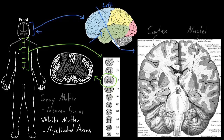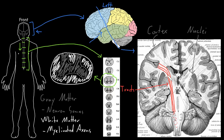Now in the white matter of the central nervous system are collections of axons traveling together to different areas. There are multiple neuron axons traveling together, starting in a similar area and heading to a similar area somewhere else in the central nervous system. Collections of axons traveling together in the central nervous system we call tracts. A tract could have many, many axons in it carrying often a very similar kind of information from one part of the central nervous system to another.